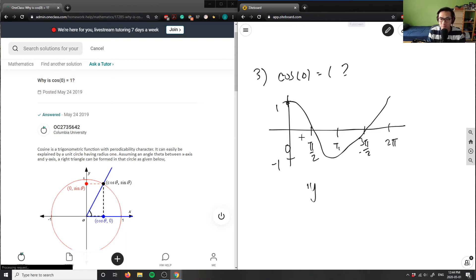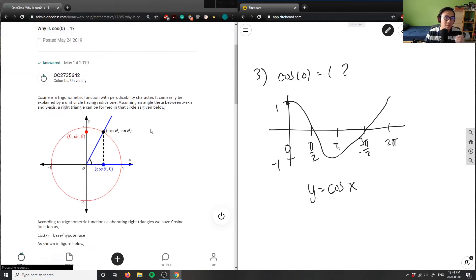Or you can say, or you can prove it using the unit circle as provided on the left here. And as you can see, they have a unit circle with a radius of 1 here, and they drew a right triangle. Again, this is 0 here, or theta, you can say. Theta is this angle here.